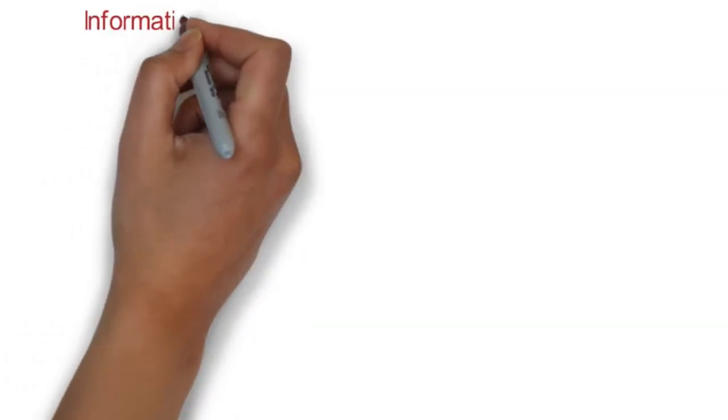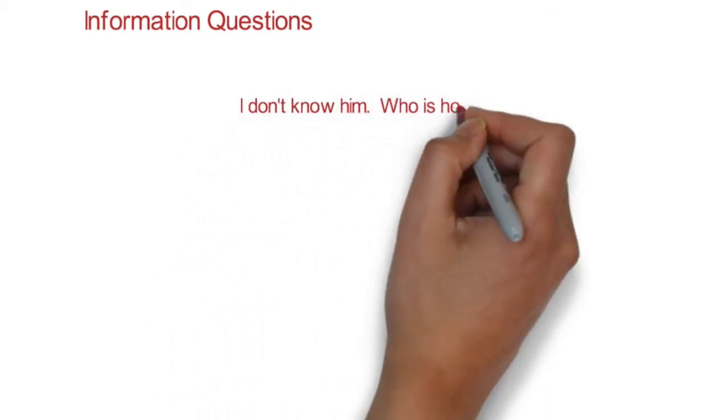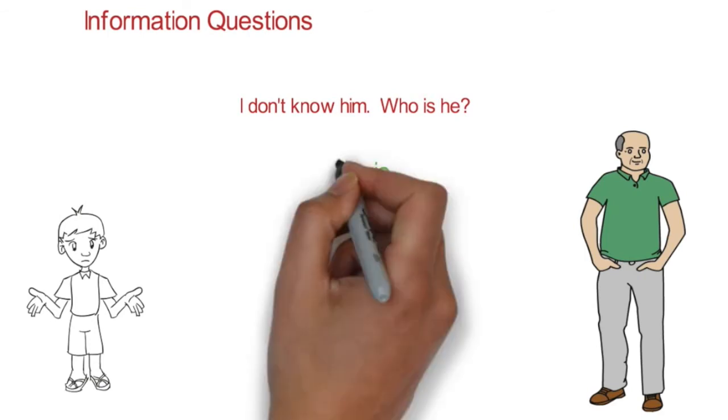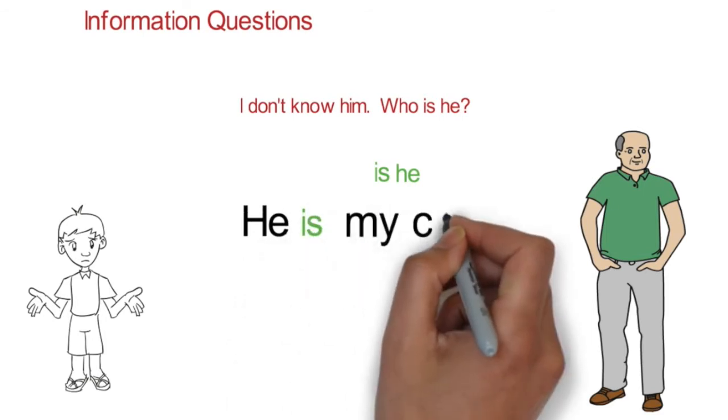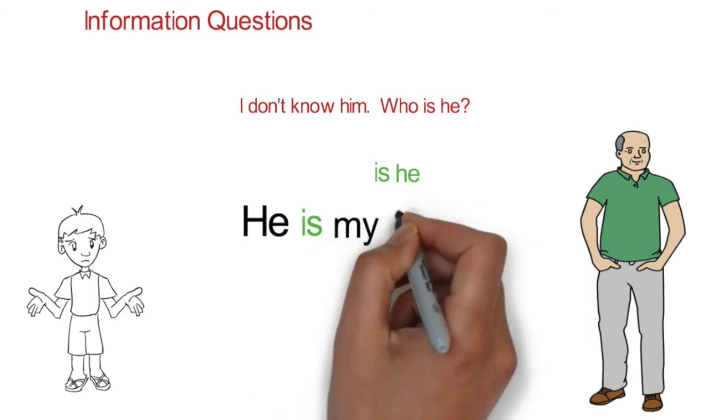Let's look at another example. I don't know him. Who is he? We use he is, but change the order of the words. This becomes Is he? Because it is a question. To answer this question, another person might say He is my cousin, He is a doctor, or He is my friend.